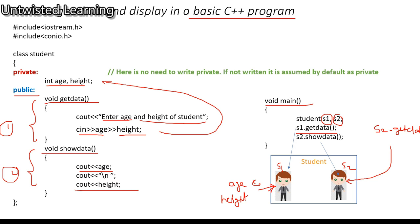By mistake, if you do not call get data and directly write S2.show_data, it will not display anything because you have only taken data in the S1 object and are trying to access S2 — which has no values. The dot operator represents access — you can access the contents of an object using the dot operator.